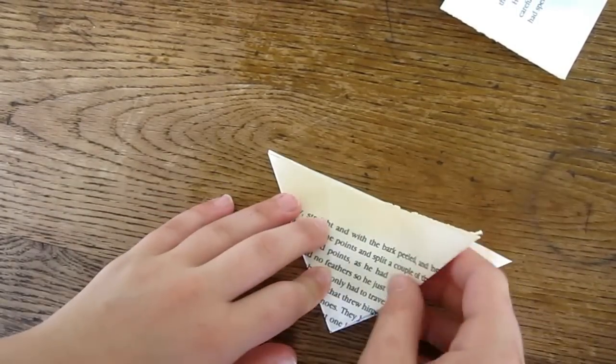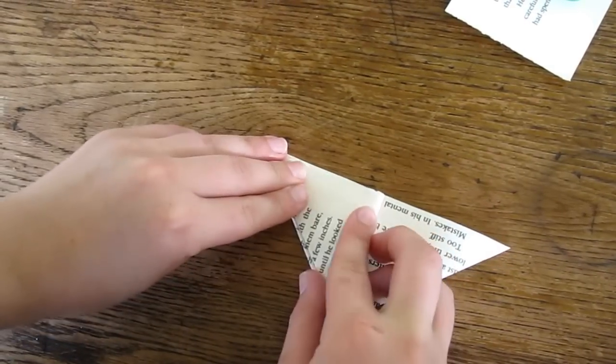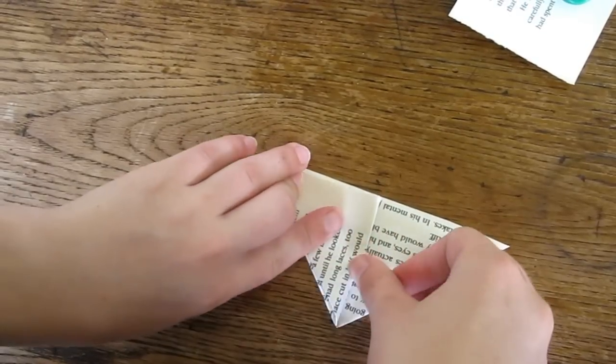Nice and neatly. Then you're going to fold back each corner to make a smaller triangle, folding it back on each side.